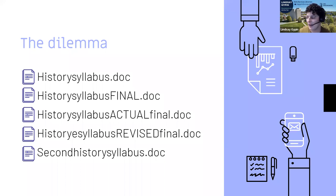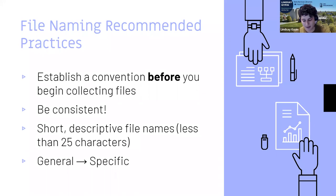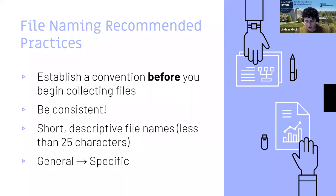That's what we're here to talk about - a couple of strategies that are going to seem really straightforward once you know them, and hopefully they'll make your lives a little more organized and easier to manage. I like to call these recommended practices rather than best practices. We're all here living our best lives and doing our best, but when we're doing file names, we're doing the recommended. So first thing: establish your conventions before you get started. Once you have a folder with a bunch of stuff in it, it's really hard to go back and start organizing it. I do have a tool at the end of the presentation you can use to think about file naming when beginning a project.